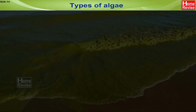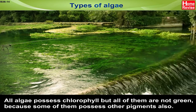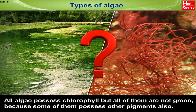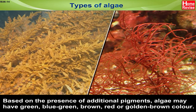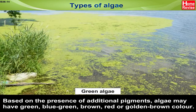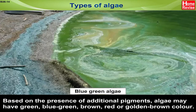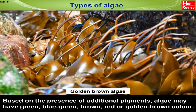Types of Algae. All algae possess chlorophyll, but all of them are not green. Why is that? Because some of them possess other pigments also. Based on the presence of additional pigments, algae may have green, blue-green, brown, red or golden-brown color.